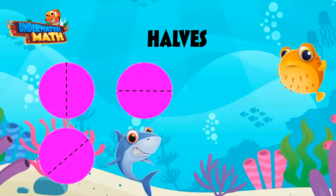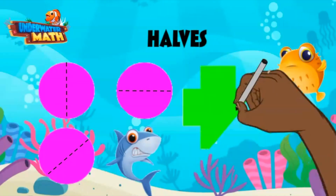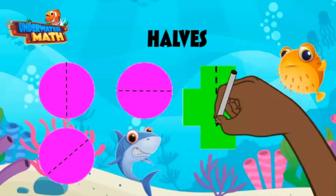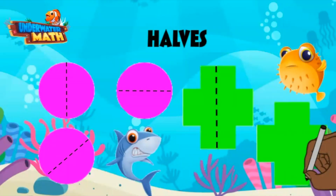Halves can also be made with diagonal or horizontal lines, even with other objects. As long as we have two equal parts, we have two halves. For instance, with this shape we can break it into halves like this, or like this.